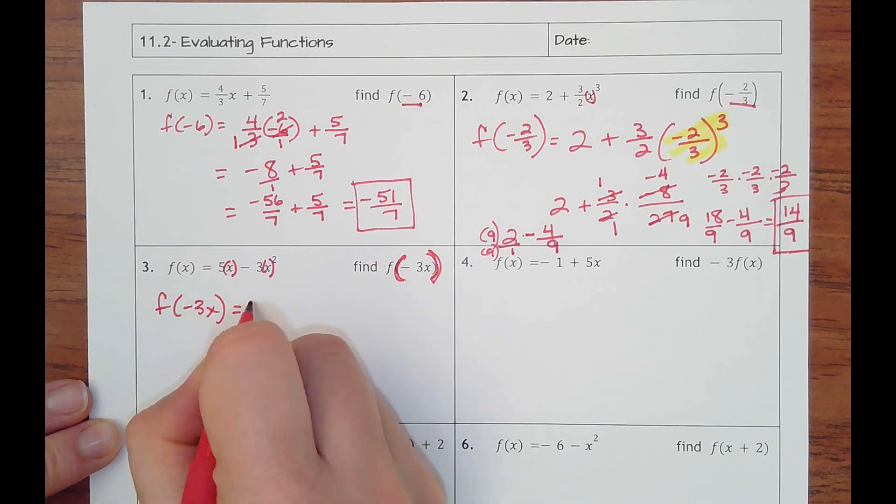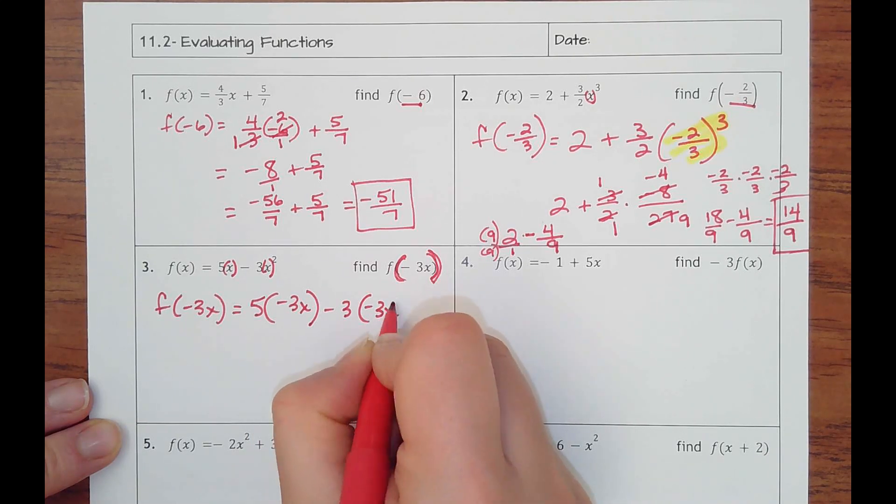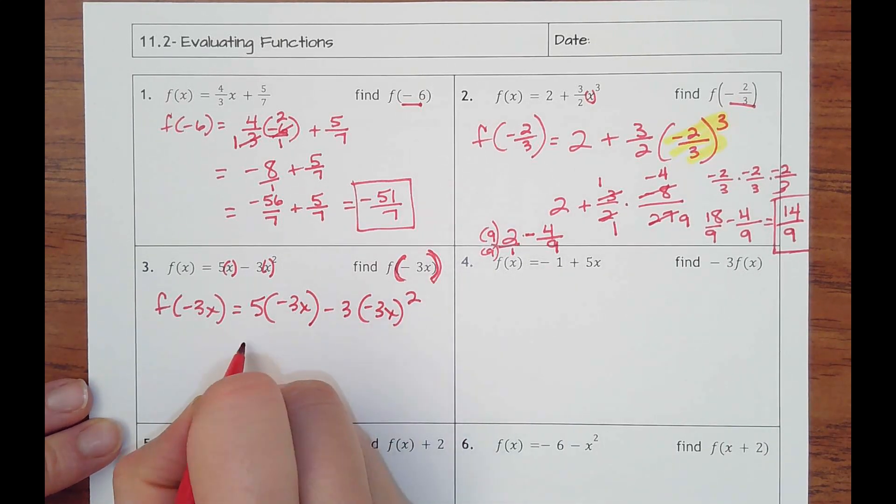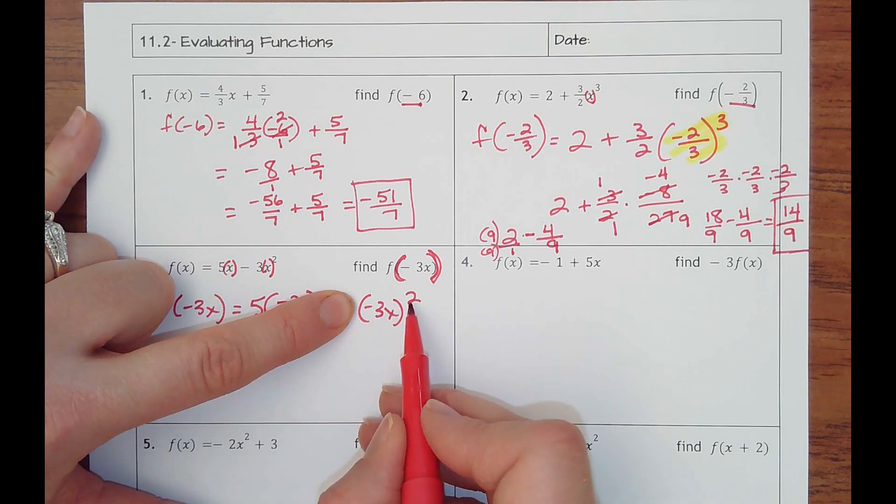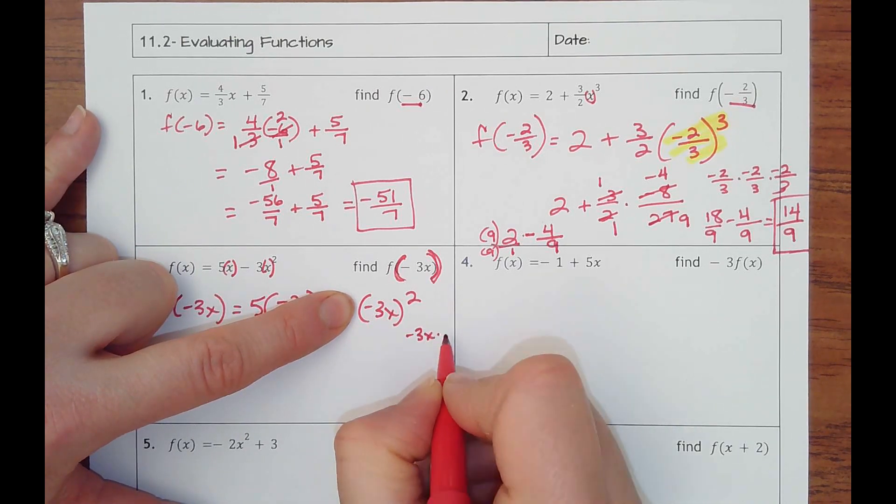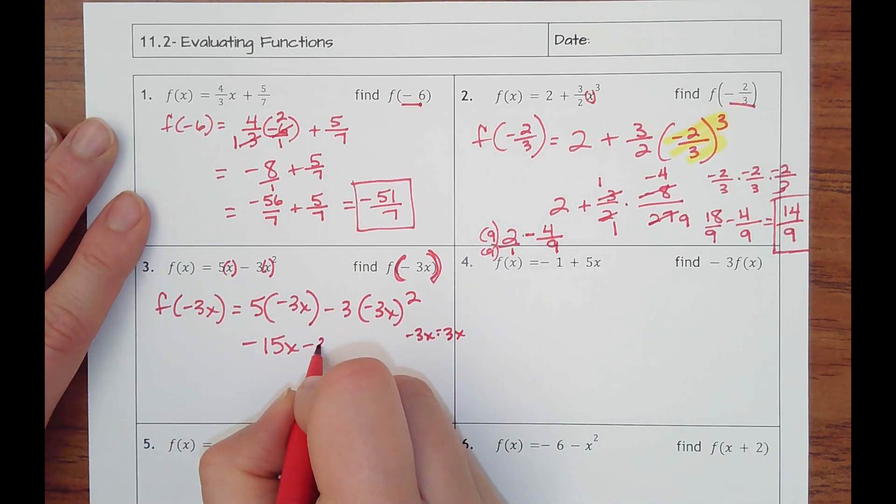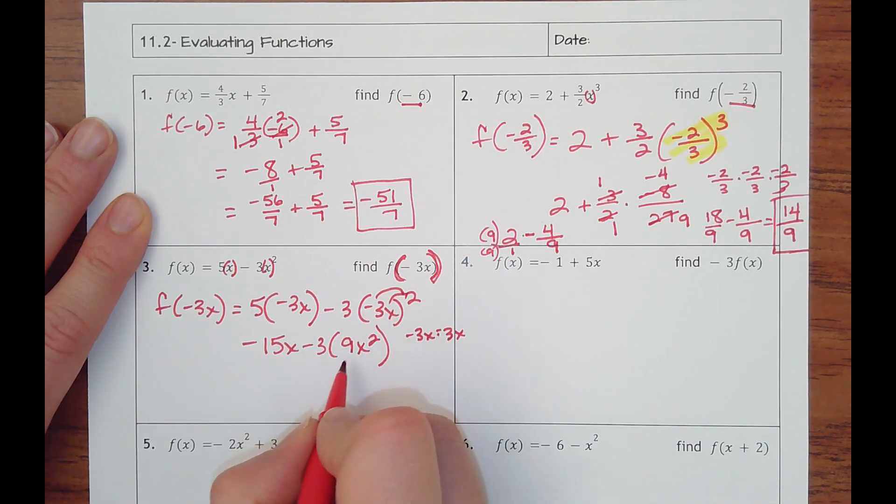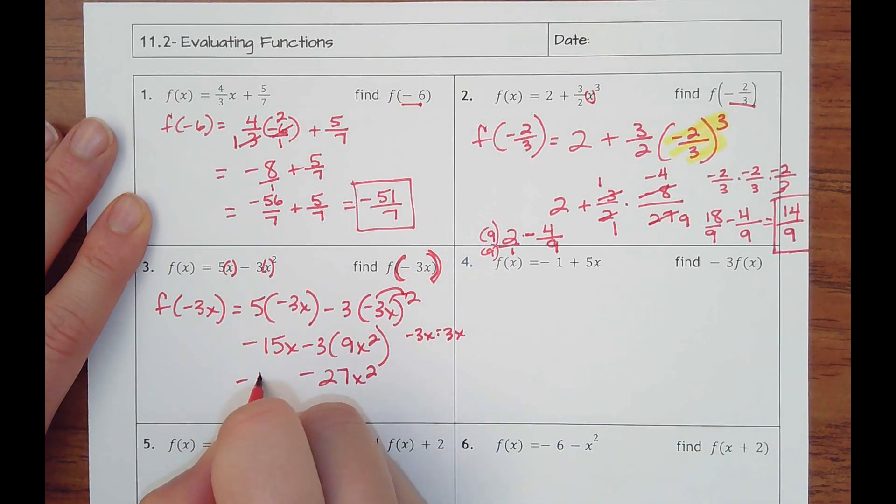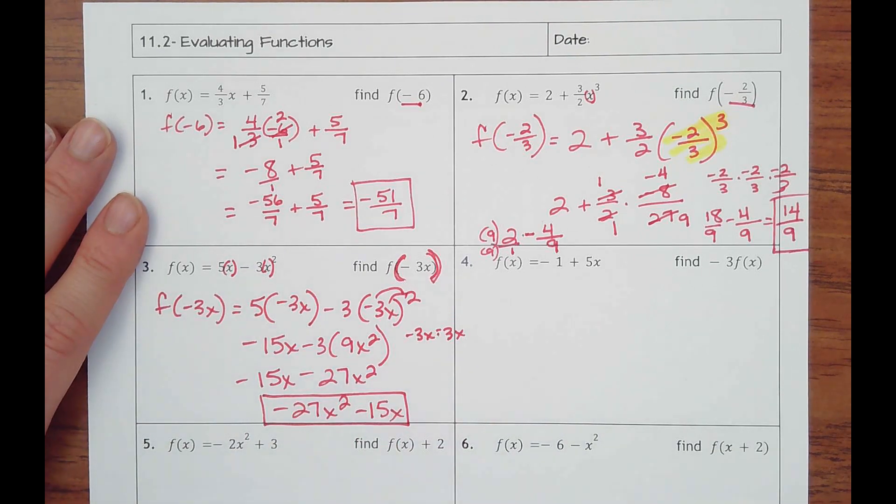So f of negative three x would be five times negative three x minus three times negative three x squared. Five times negative three x is negative 15 x. Again, I want to do my exponent before I do multiplication. So negative three squared, because this is going to be negative three x times negative three x, negative three times negative three is nine, and then it'd be x squared. So each part gets the squared. And then I would do multiplication. That would be negative 27 x squared. You can choose to rewrite this so the biggest exponents first or just leave it. That's it because I don't have any more like terms.